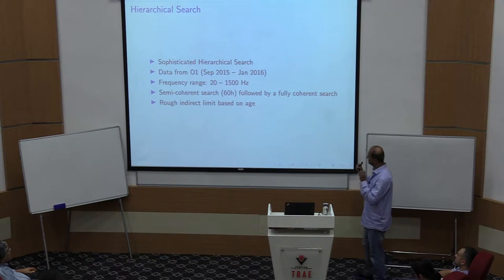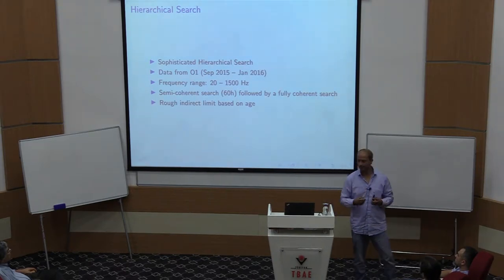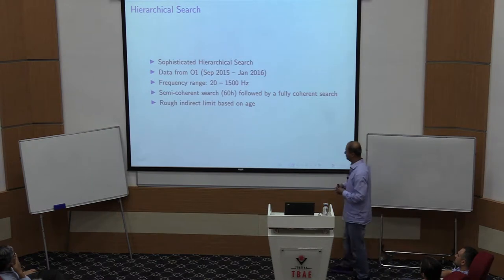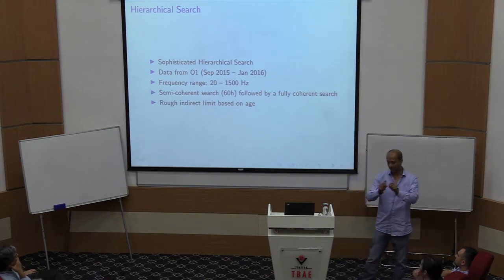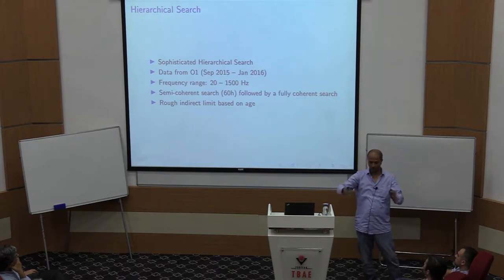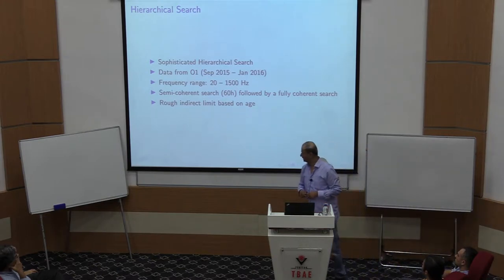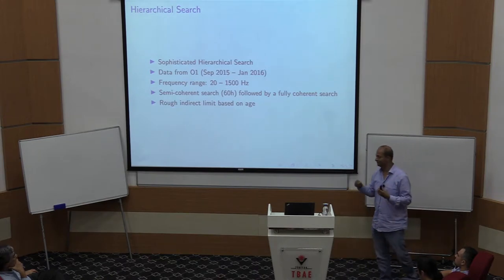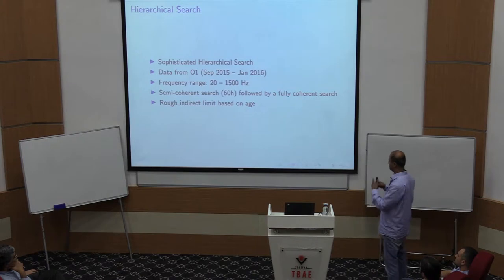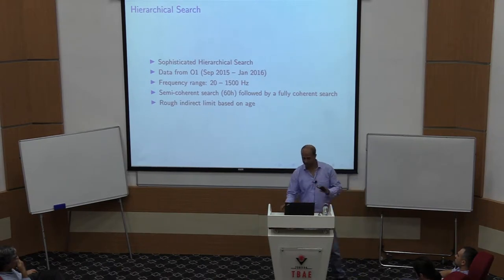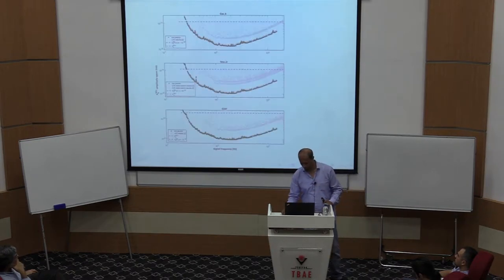The search I'll present is from O1 and uses a reasonably sophisticated hierarchical search. Because of computational limitations, the first cut cannot be the most sensitive search, so it is done in different stages. This particular approach is called a semi-coherent search: you cannot filter the data coherently for the full duration, so you break it into shorter segments, process each segment coherently, and combine them. For sources with known age, there is also an indirect limit on the amplitude based on the age, which sets a limit on the spin-down and frequency.